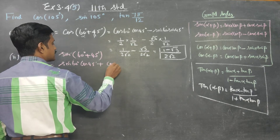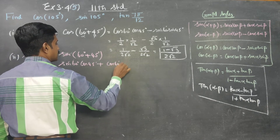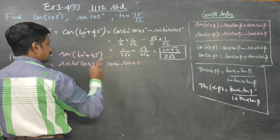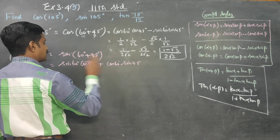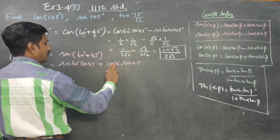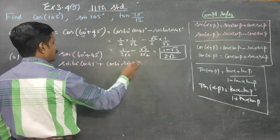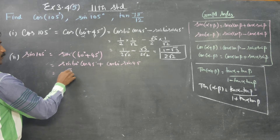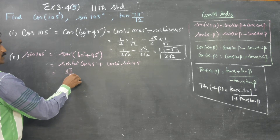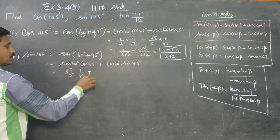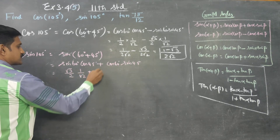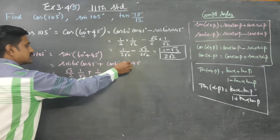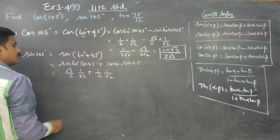The pattern is sin·cos, cos·sin, applied to 60 and 45. What is sin 60? Root 3 by 2. Cos 45 is 1/√2. Cos 60 is 1/2. And sin 45 is 1/√2.